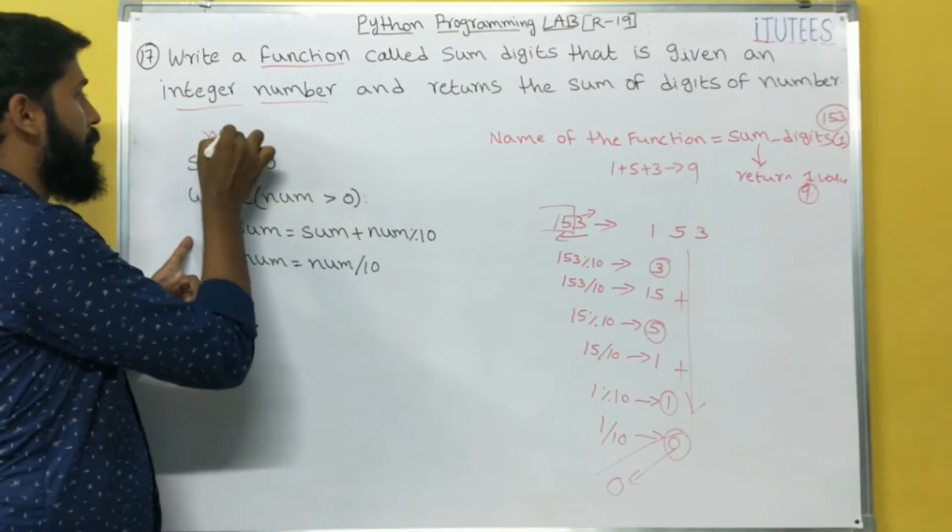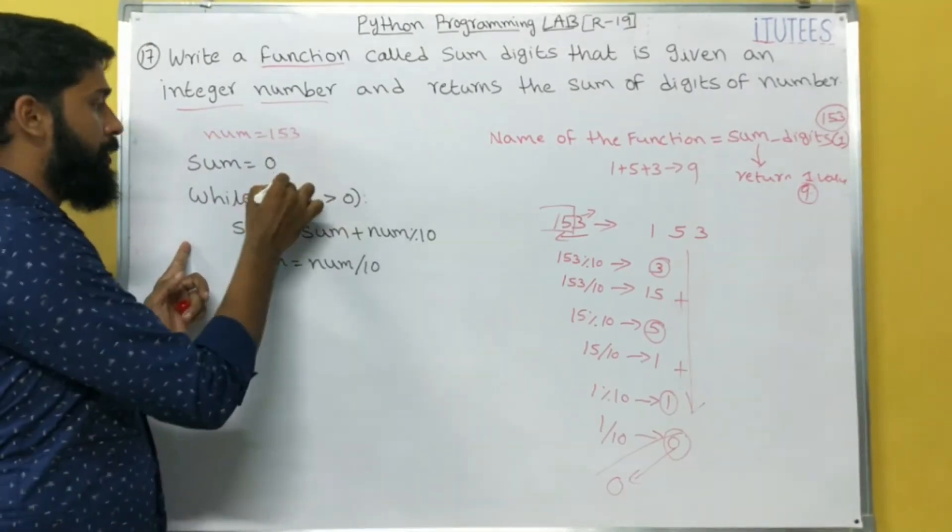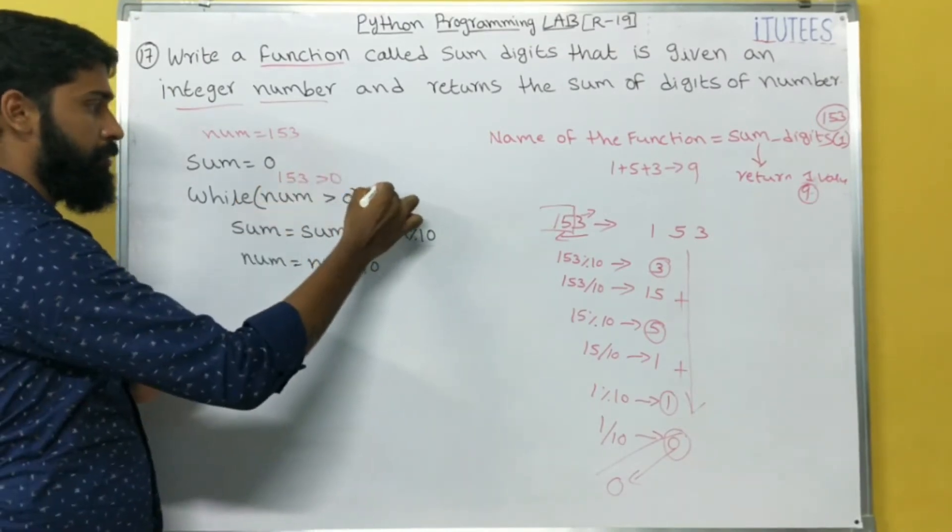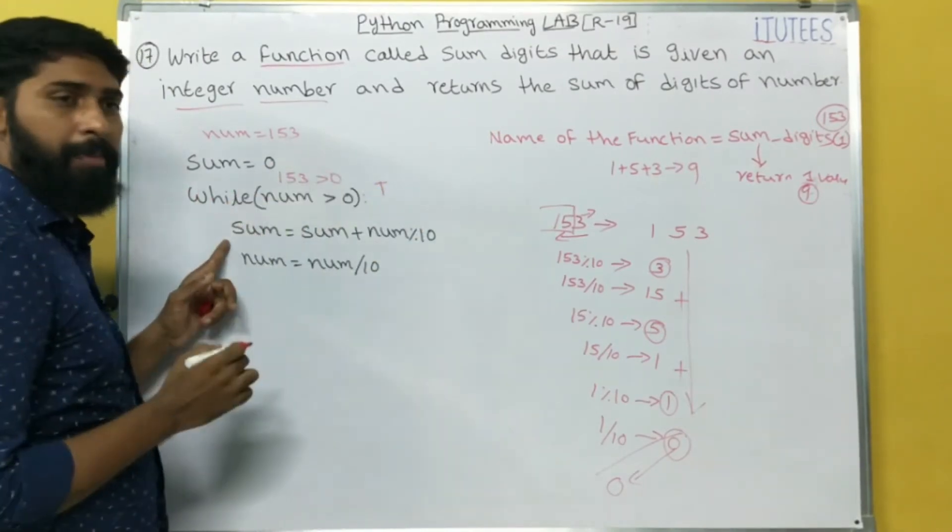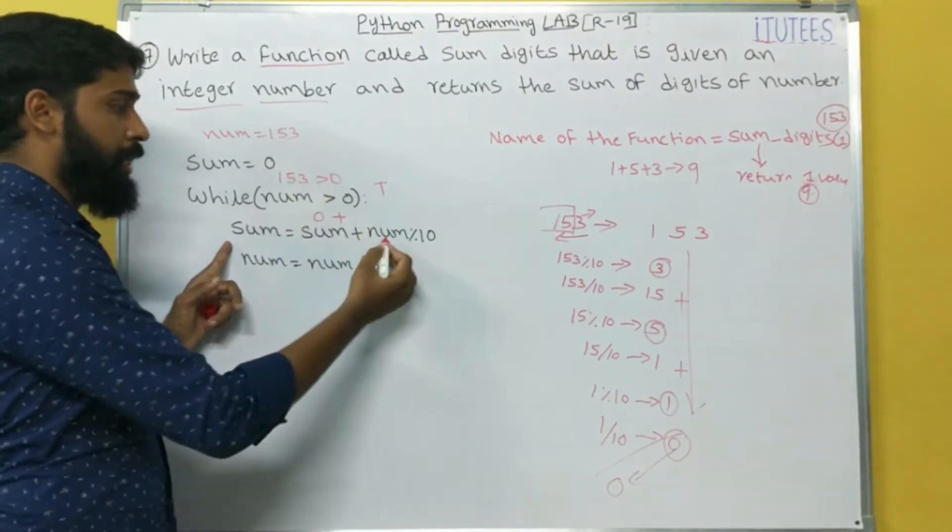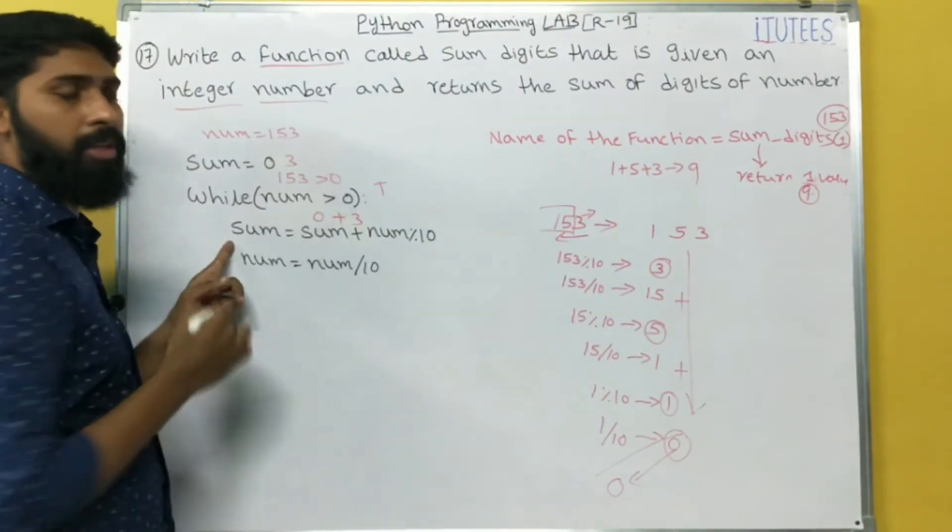Here is the logic. You are taking a number. For example, num equals to 153. 153 greater than 0. It is true. So, sum equals to, what is the sum value initially? 0 plus num percentage 10. 153 percentage 10 means 3. That means, sum equals to 3.